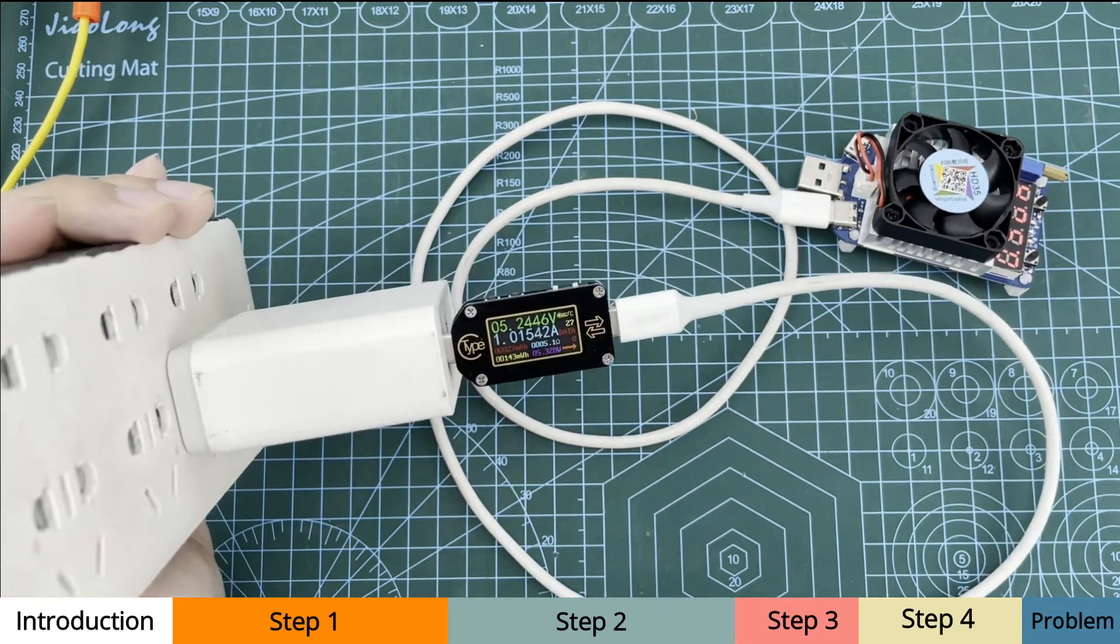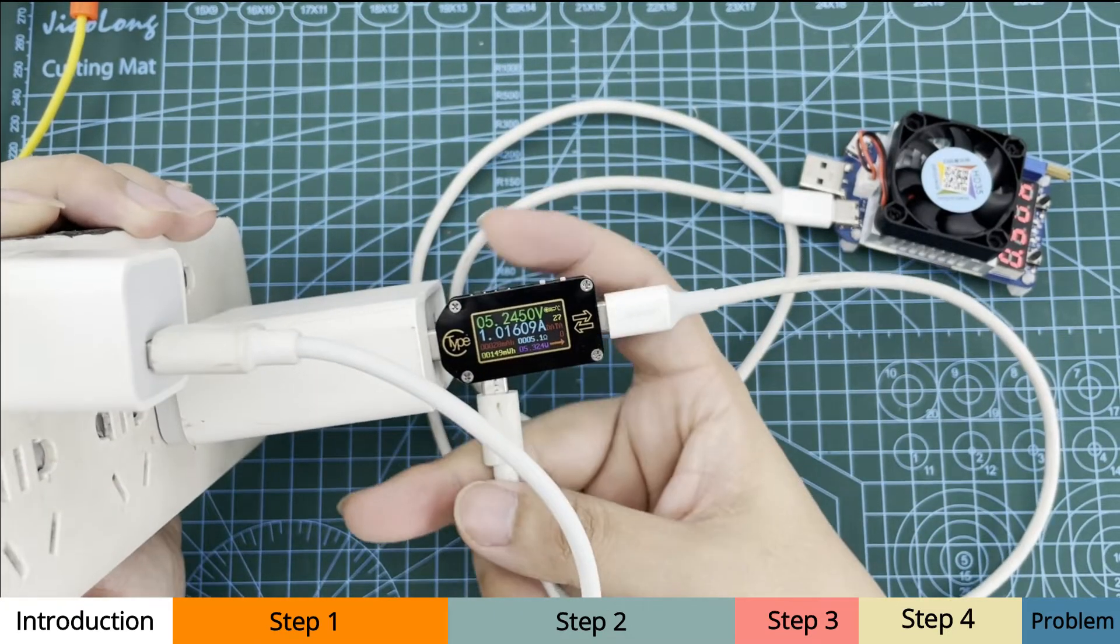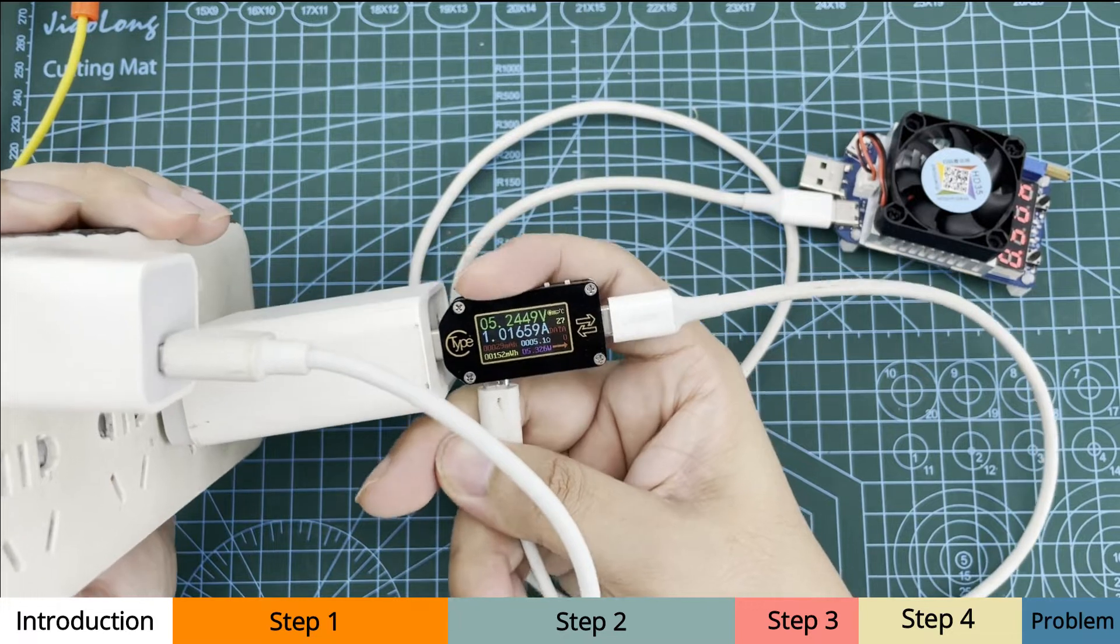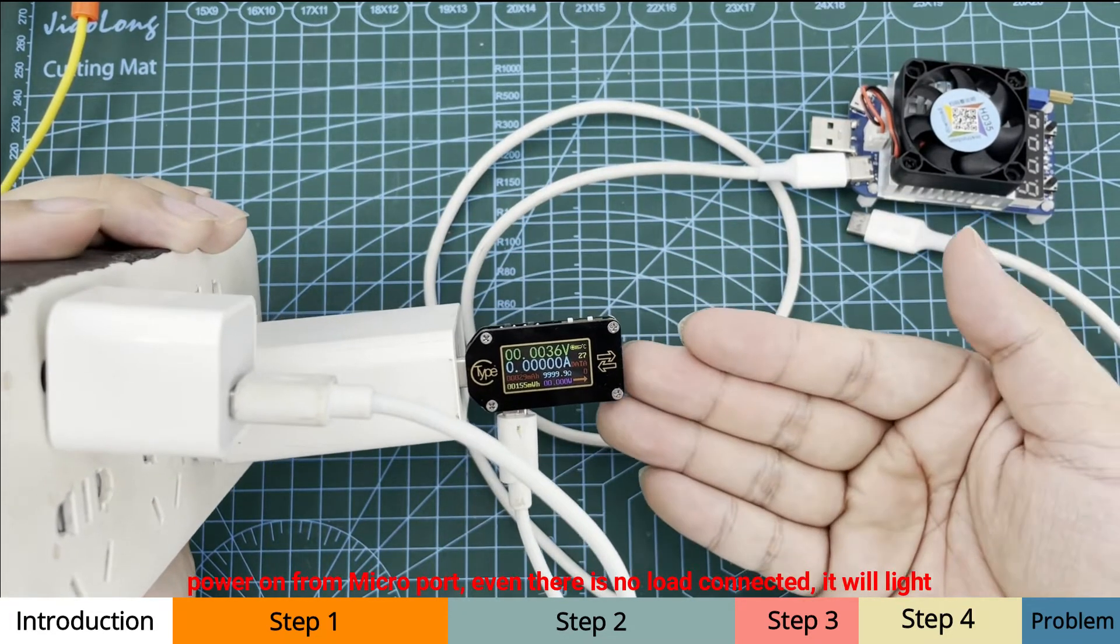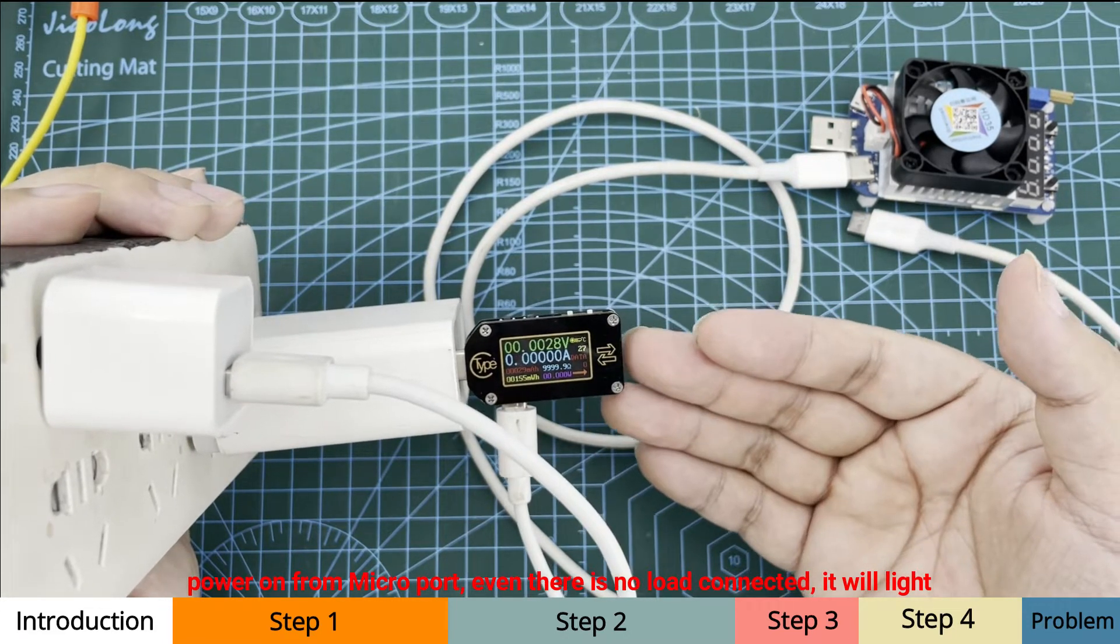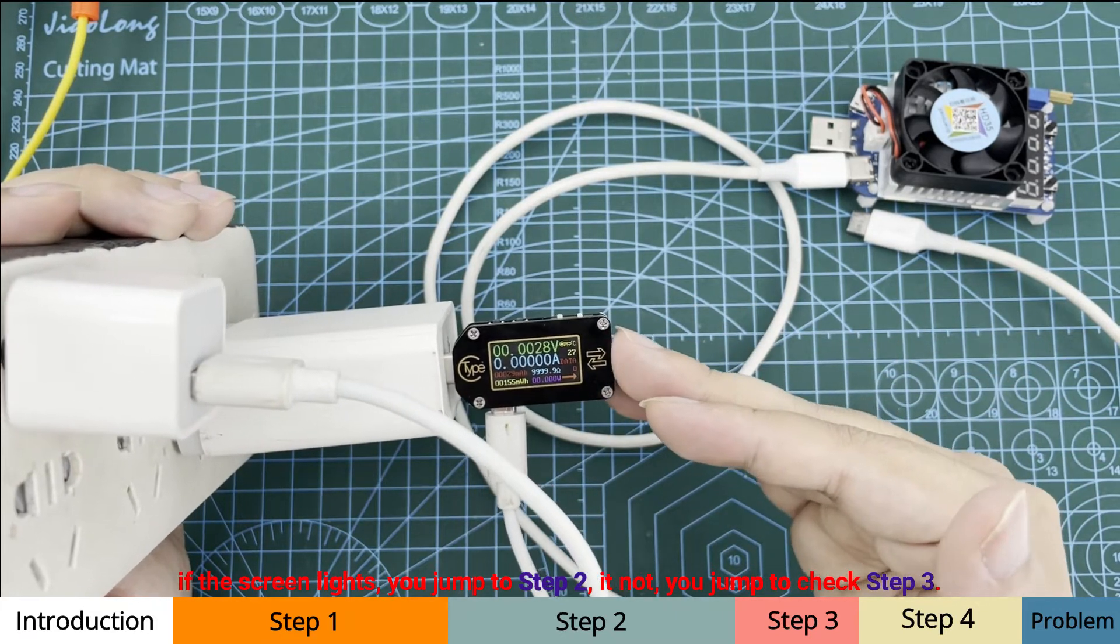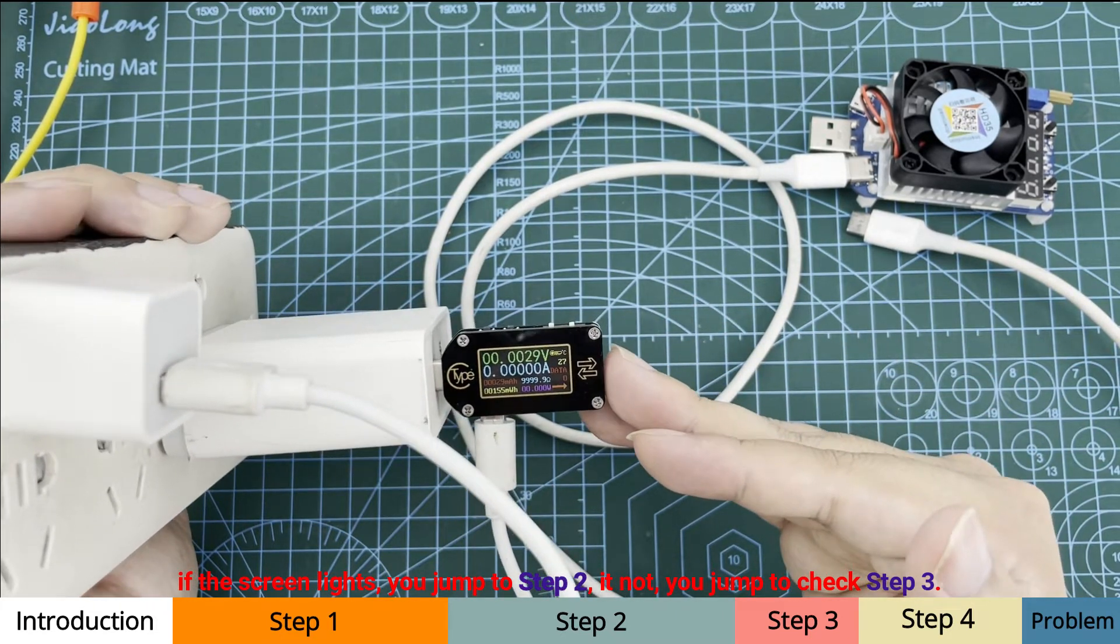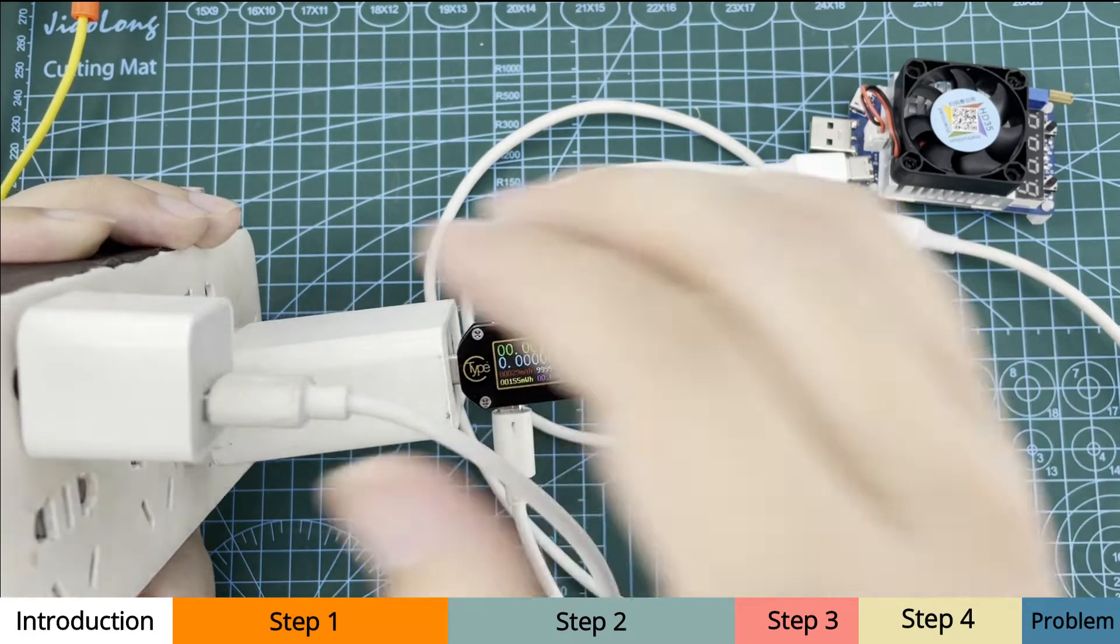OK, now we can see. Normally, if there is no load connected, it will still light. So if it lights, jump to step 2. If it does not light, jump to step 3.